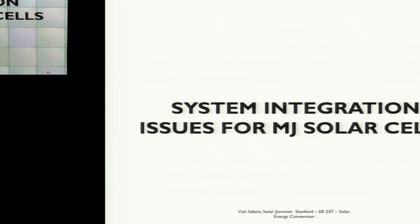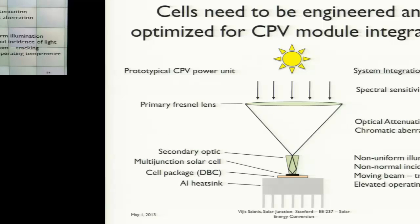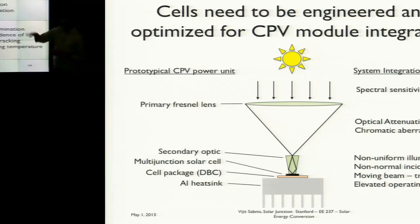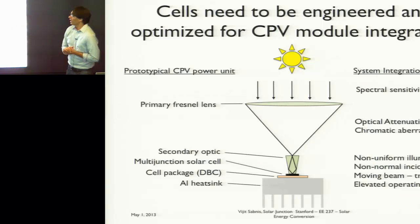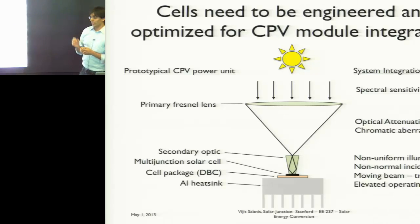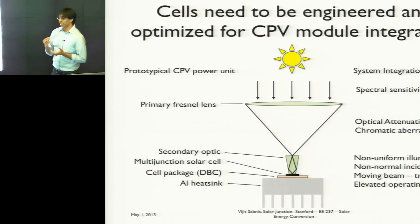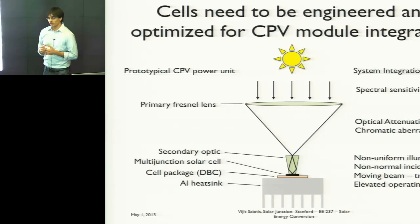Let me now get into some system integration issues. In a multi-junction solar cell, you typically have a Fresnel lens, a secondary optic used to homogenize the light down on the solar cell, the solar cell itself, a package, and a heatsink. Each of these different components affects the light on the solar cell and ultimately the performance the solar cell is able to deliver.